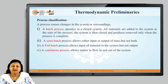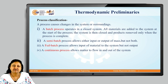A process causes changes in the system or surrounding. The process can be classified as a batch process, semi-batch process, fed-batch process, or continuous process. A batch process operates in a closed system. All materials are added to the system at the start of the process. The system is then closed and products removed only when the process is completed.